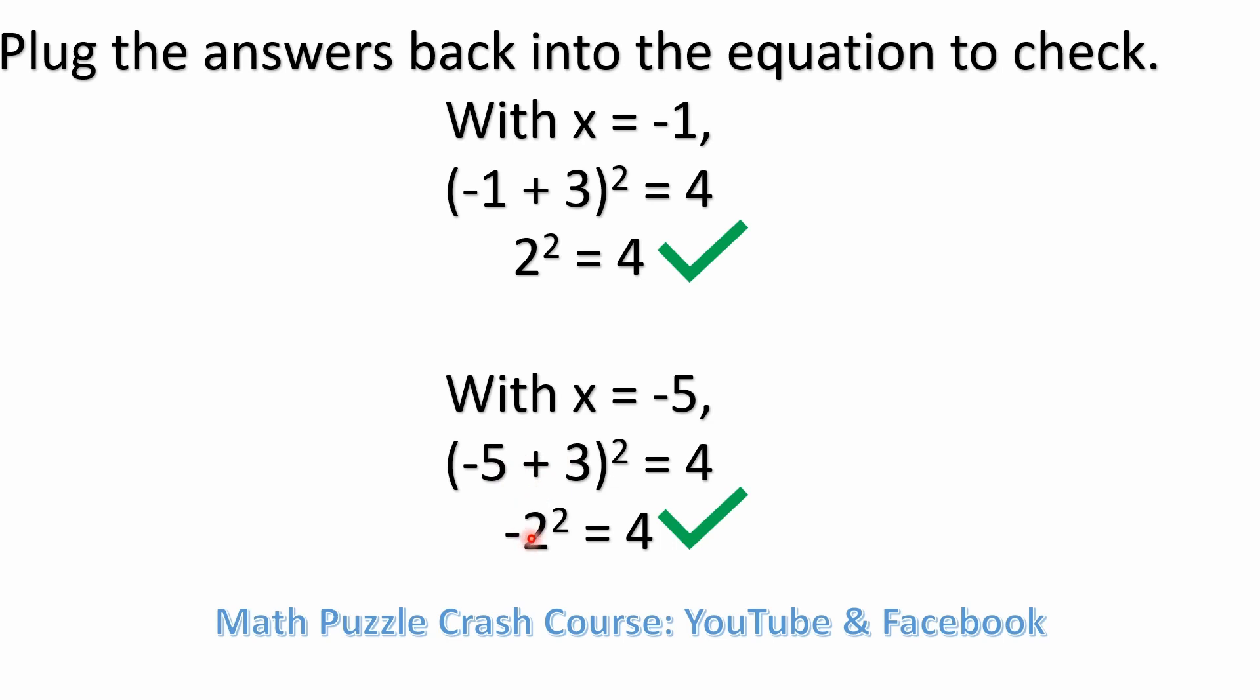Well, what would be minus 2 squared? Minus 2 squared is the same thing as minus 2 times minus 2. Well, a negative times a negative is always a positive, right? So minus 2 squared is again equal to 4.